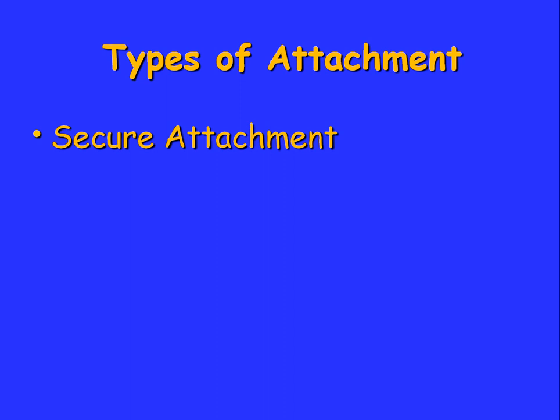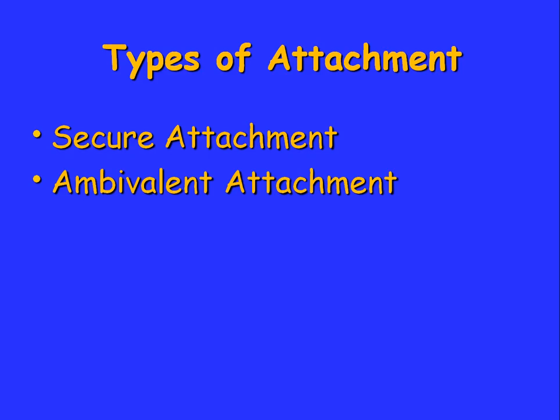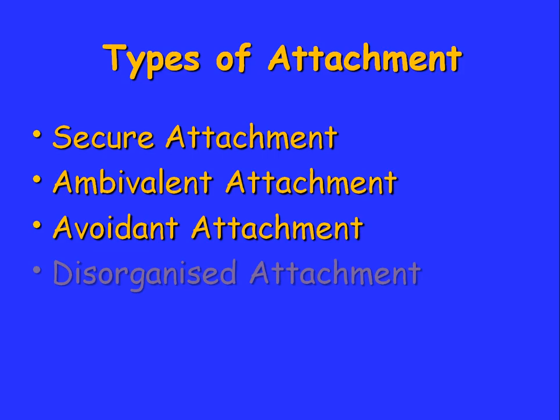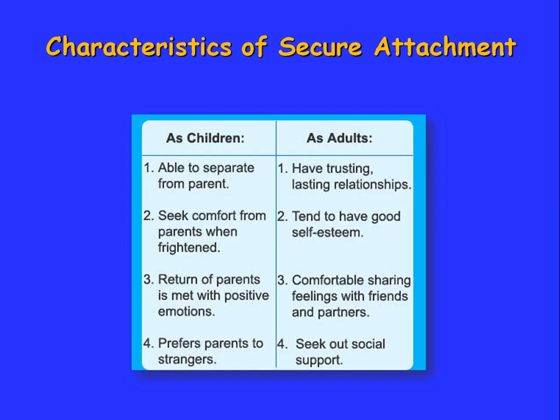Let's look at the types of attachments that Bowlby talked about. The first is called secure attachment, the second is ambivalent attachment, then avoidant attachment, and finally disorganised attachment. As the presentation moves forward, I'm going to be expanding on these ideas.